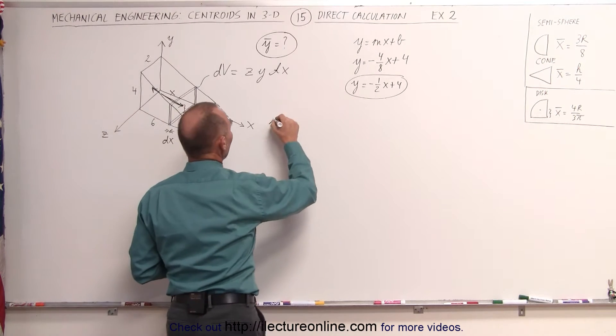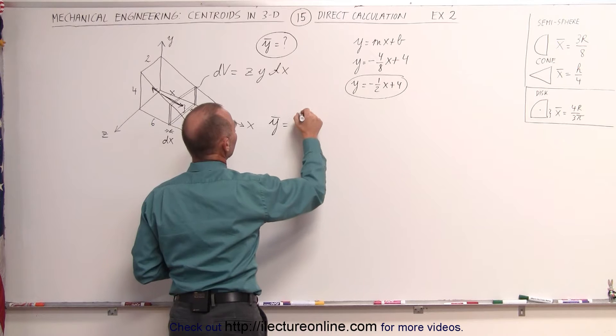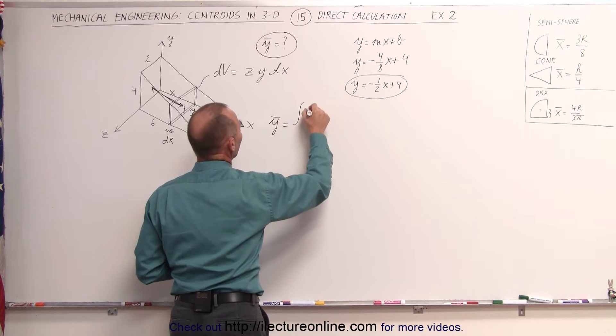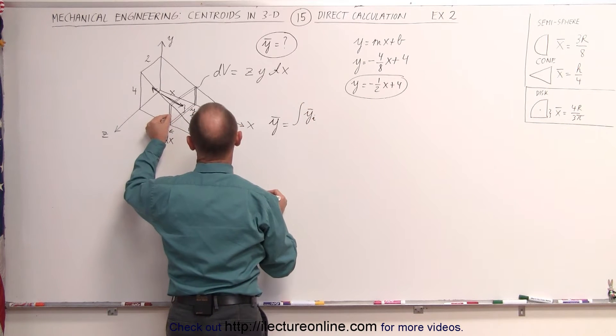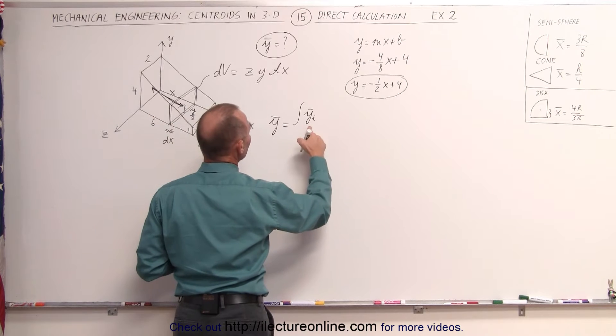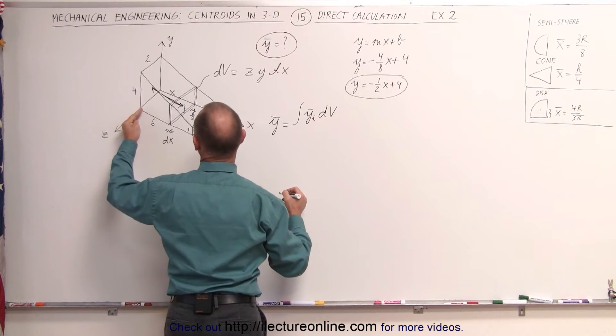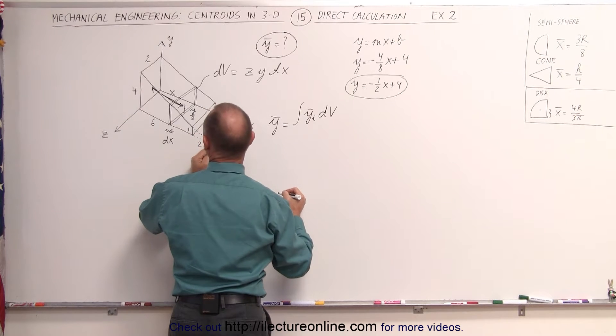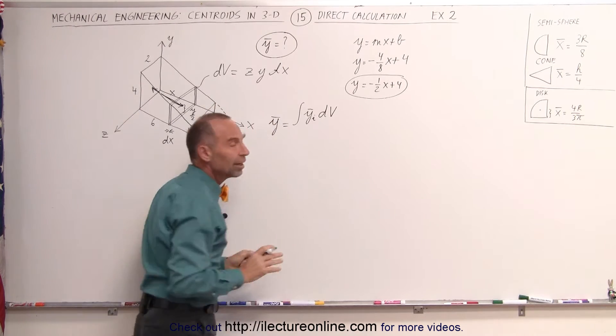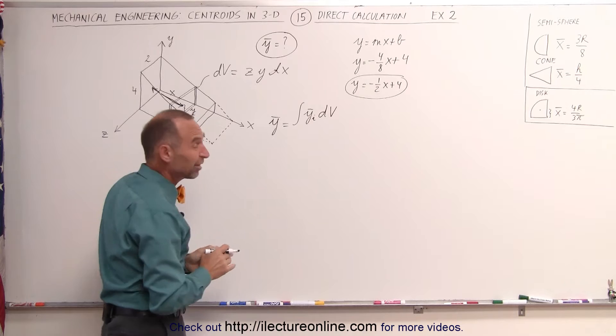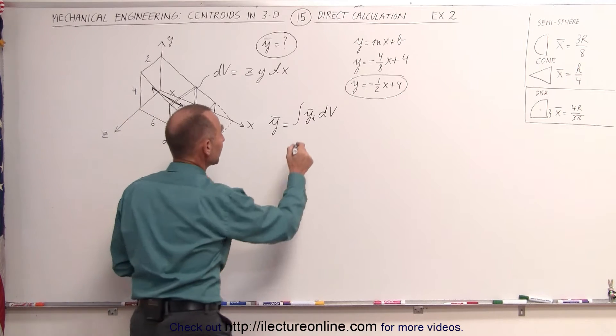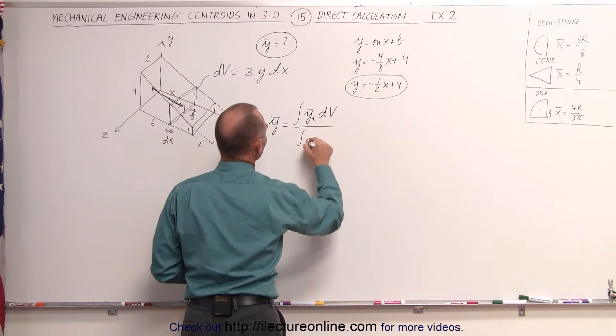The equation to find the y-coordinate of the centroid, that's equal to the integral of the y-coordinate of each little small volume dv times the dv, and we're going to integrate it from 0 to, let's see, from 0 to 8 of, well, let's leave the limits of integration out for this moment because we don't know what our differential is yet, divided by the integral of dv.